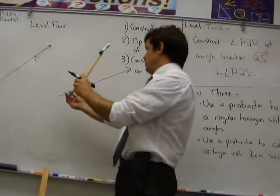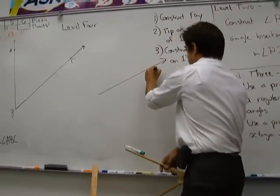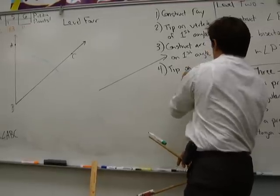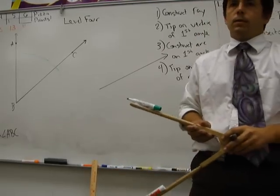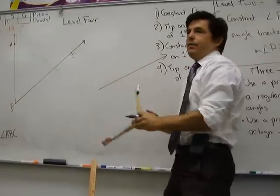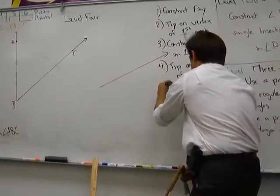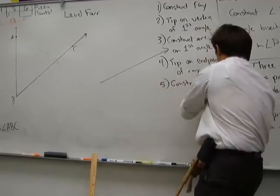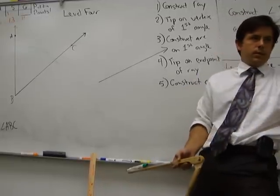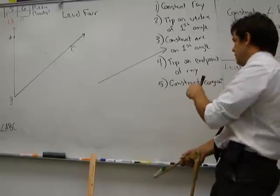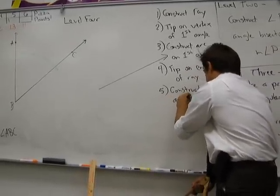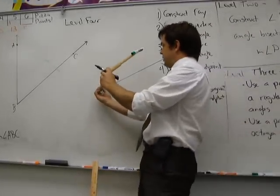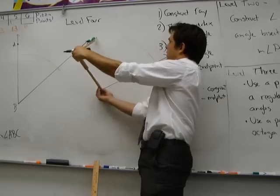Step four, put tip on endpoint of ray. Simple. Step five, construct congruent. Does anyone know what congruent means? Anybody? It means the same. Congruent. Congruent arc from endpoint. So congruent arc, so I go to this endpoint and construct this arc.